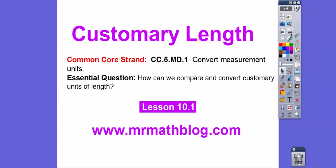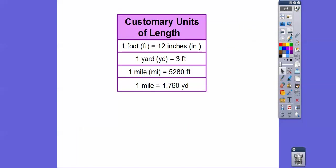Here's our common course strand for our teachers, and our question is: how can we compare and convert customary units of length? So we're either going to multiply or divide. Here are our customary units of length: 1 foot equals 12 inches, 1 yard is 3 feet, 1 mile is 5,280 feet. And 1 mile also equals 1,760 yards — we get that by dividing 5,280 by 3, since there are 3 feet in each yard.